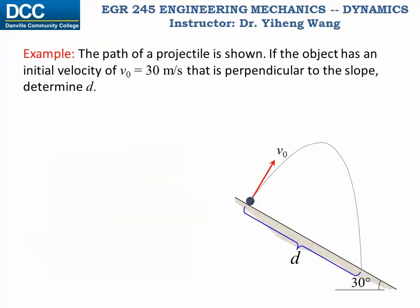Let's look at this example. The path of the motion of this projectile is shown. And if it has an initial velocity of 30 m per second and the direction is perpendicular to the slope, we are asked to determine the distance d.